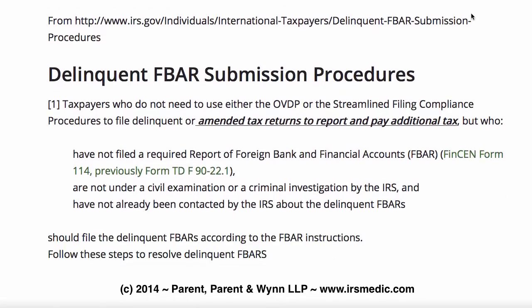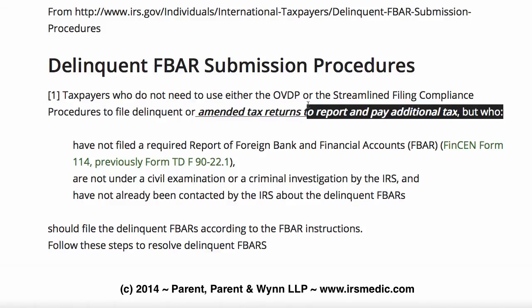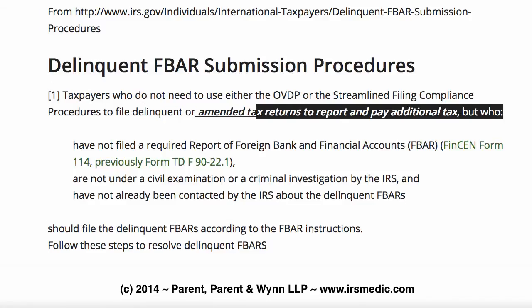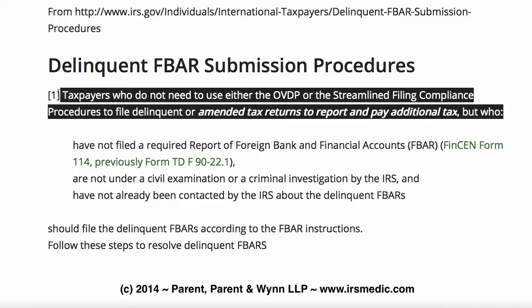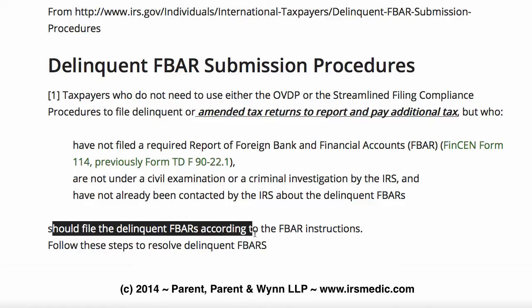This is where I've copied and pasted the IRS delinquent FBAR submission procedures from IRS.gov. Our first note is that we look here to taxpayers who do not need to use either the OVDP or the streamlined filing procedures to file delinquent or amended tax returns to pay additional tax, but who have not filed an FBAR and are not under examination — they should simply file delinquent FBARs according to the FBAR instructions.